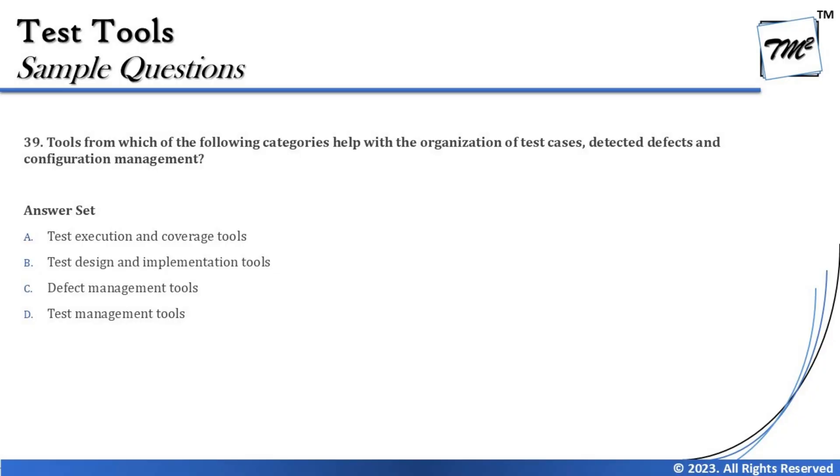Question number 39 asks: tools from which of the following categories help with the organization of test cases, detected defects, and configuration management? The test management tool is the only tool which comprises every single thing. These days we also know them as ALM — Application Lifecycle Management — which covers end-to-end management including release management, configuration management, defect management, and build management. When test case management, configuration management, and defect management are combined, we call it a test management tool.